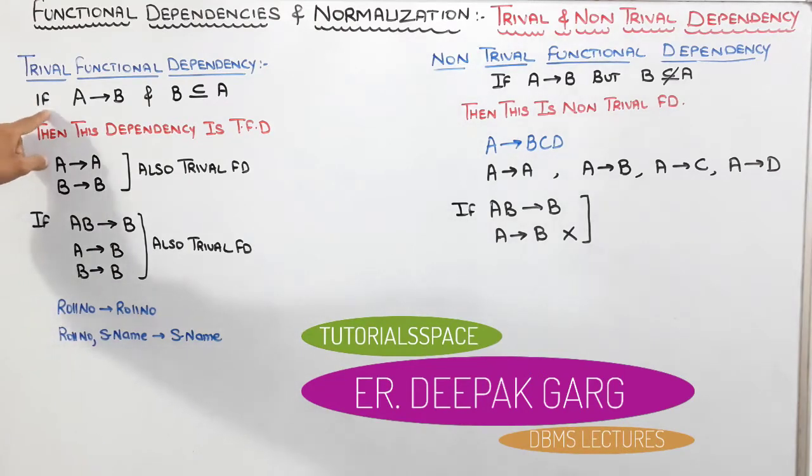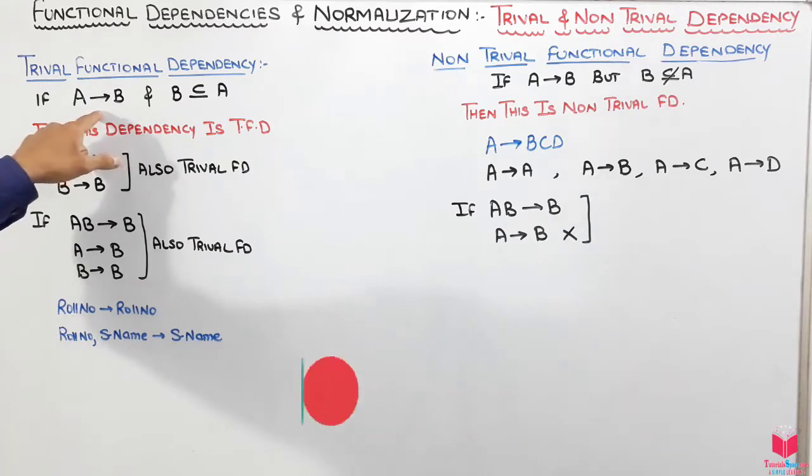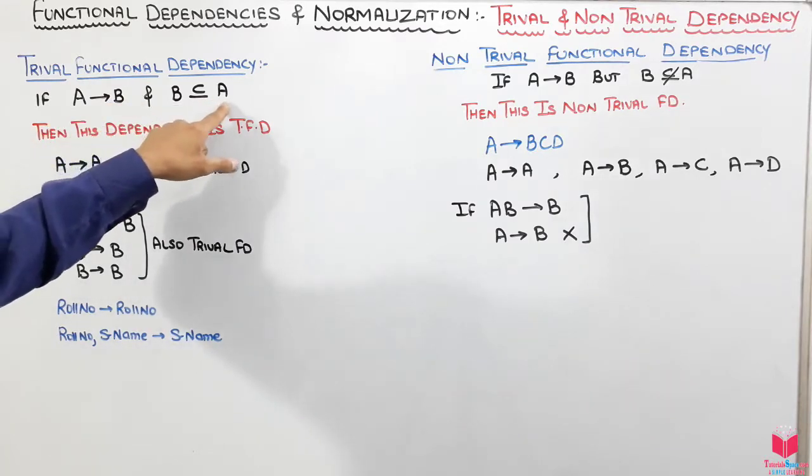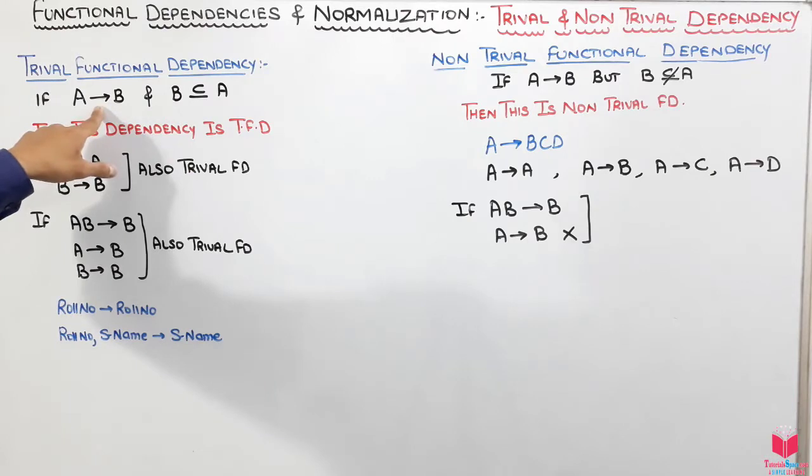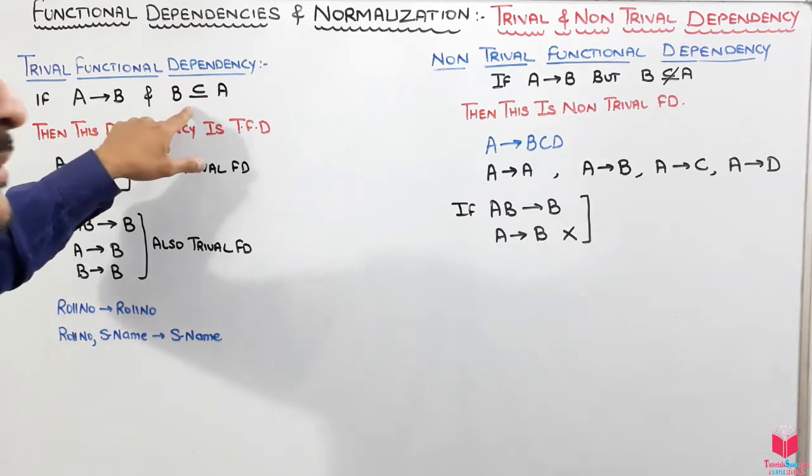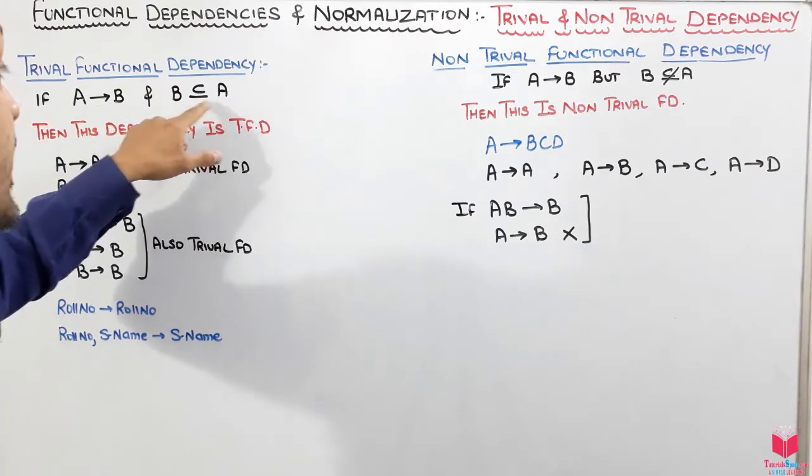Trivial functional dependency says that if B is functionally dependent on A and B is a subset of A, that means this talks about the values and this talks about the attributes in B and A.